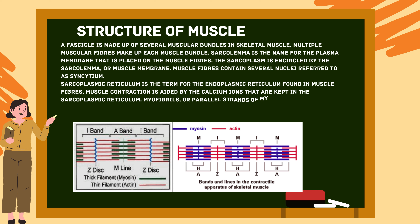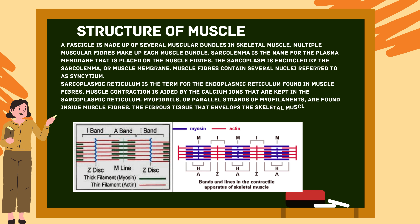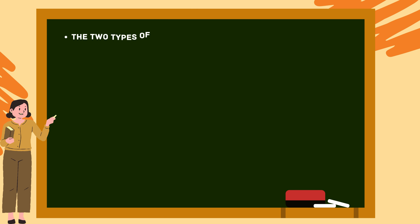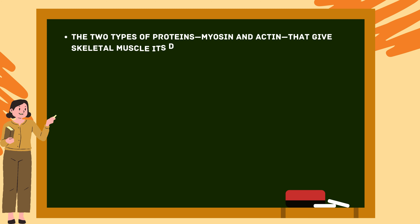Muscle contraction is aided by calcium ions stored in the sarcoplasmic reticulum. Myofibrils, or parallel strands of myofilaments, are found inside muscle fibers. The fibrous tissue that envelops the skeletal muscle is called the epimysium. The two types of proteins — myosin and actin — give skeletal muscle its distinctive stripes.